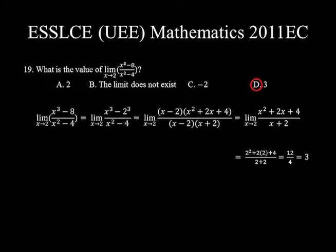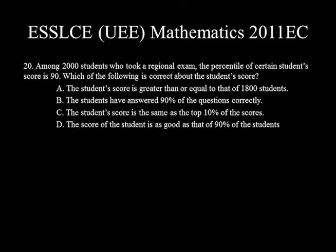Substituting x = 2: (4 + 4 + 4)/(2 + 2) = 12/4 = 3. Hence choice D is the correct answer.